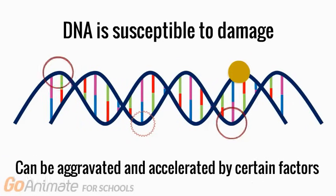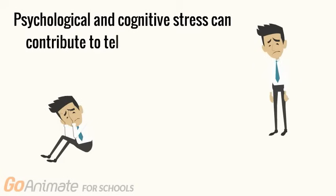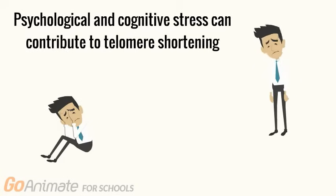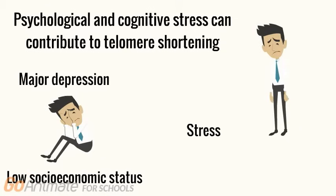Additionally, this process can be aggravated and accelerated by certain diseases and lifestyle choices. Psychological and cognitive stress have shown to worsen telomere length, unlike healthy individuals. This is also implicated in patients with major depression and those with a lower socioeconomic status. A stressful life overall may complement the aging process.